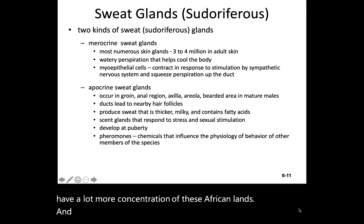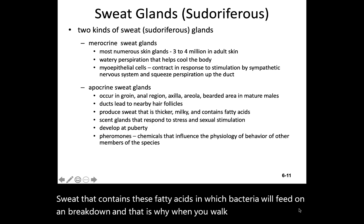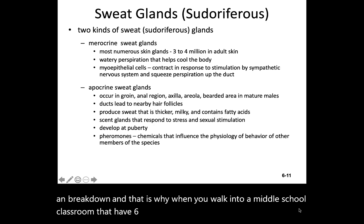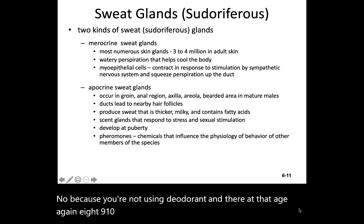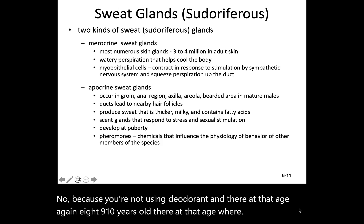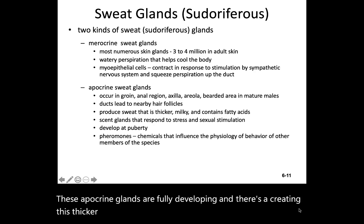The sweat that apocrine glands produce is a thicker, milkier sweat that contains fatty acids on which bacteria will feed and break down. That is why when you walk into a middle school classroom of sixth or seventh graders, it smells like an Italian sub shop — because they're not using deodorant and they're at that age, eight, nine, ten years old, where these apocrine glands are fully developing and secreting this thicker, fattier sweat byproduct.